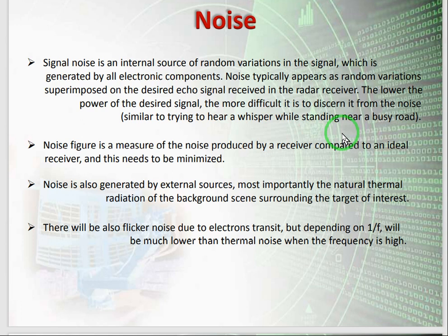The noise figure is defined as a measure of noise produced by a receiver compared to an ideal receiver. Noise is also generated by external sources — most importantly, the natural thermal radiation of the background scene. There will also be flicker noise due to electronic transit, depending on 1/f, but it will be much lower than thermal noise at higher frequencies. Flicker noise is generated by the switching of electronic devices and depends on the switching frequency.